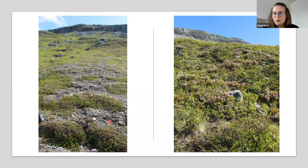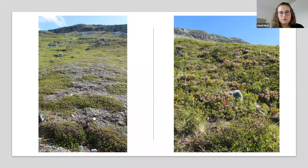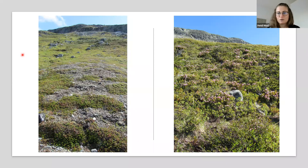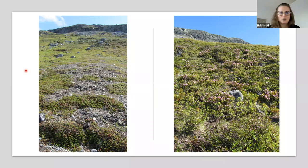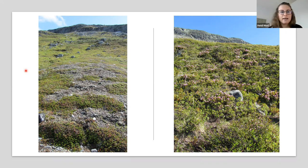Here are two photos from the same mountain - one on the left from the north side and one on the right from the south side of the same hill situated in northernmost Finland. We can see that the vegetation looks pretty different, so there is spatial variation in the distribution of the vegetation.